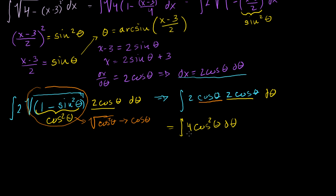This is equal to the integral of 4 cosine squared of theta dθ. By itself, this is still not an easy integral — I can't do u-substitution or anything like that. So we resort to our good old trig identities. Now, cosine squared of theta can be rewritten as one half times (1 plus cosine of 2 theta). This tends to appear on the inside cover of most calculus or trig books, and I've proven it in multiple videos.